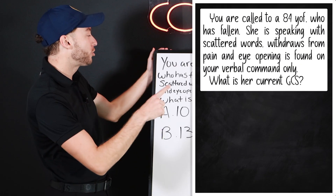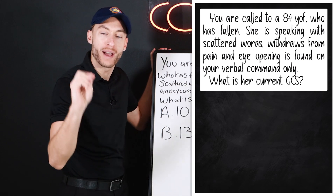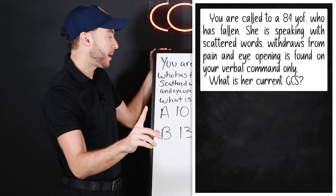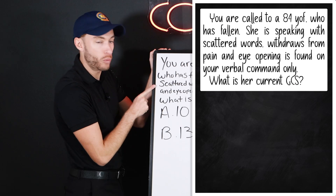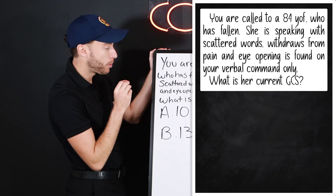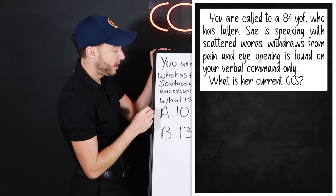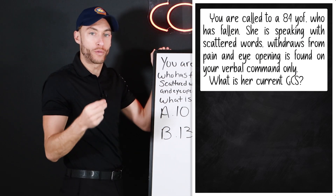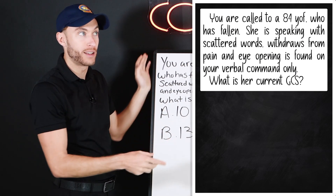You are called to an 84-year-old female who has fallen. She's speaking with scattered words — inappropriate words — withdraws from pain, and eye-opening is found on your verbal command. What's the GCS?